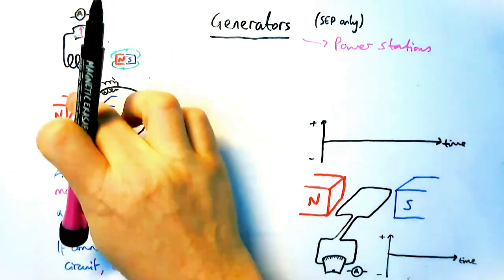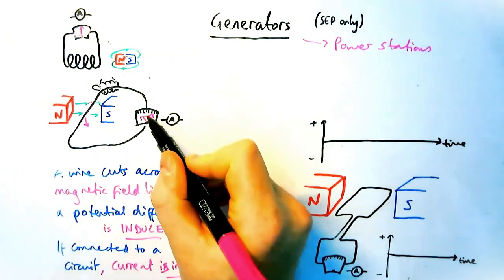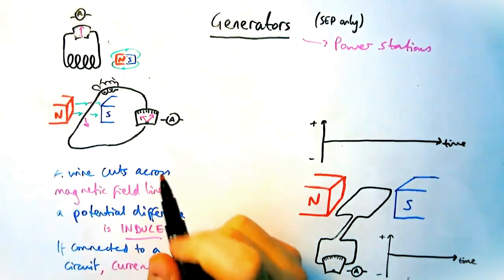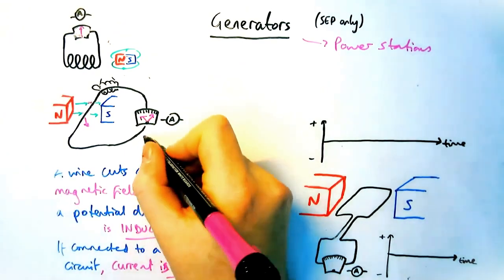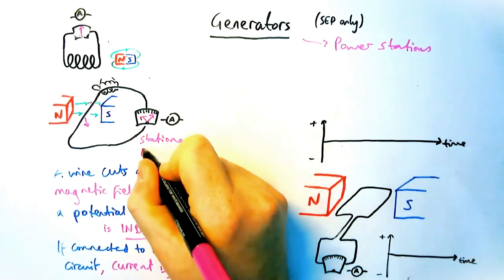you'll have a current in one direction. And then if you move it in the opposite direction, the current will reverse. So it will go in the other direction on the dial. Again, if there's no movement, then there is going to be no current induced at all.